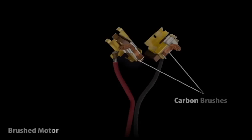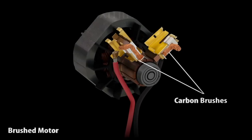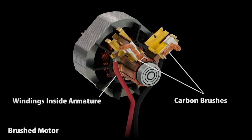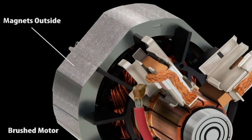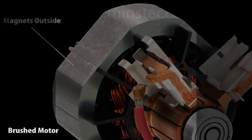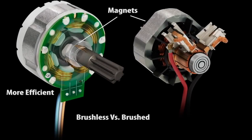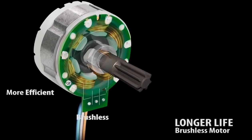The brushed motor runs with two carbon brushes that will require replacement after extended use, and the brushed motor's magnets are on the outside of the motor while the windings are on the inside, just the opposite of the more efficient LXT brushless motor.